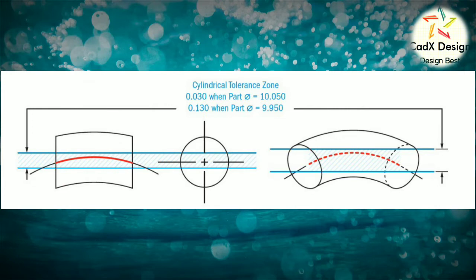GD&T tolerance zone: Two parallel lines on either side of a surface line where the surface must lie. A cylindrical boundary around the true central axis of the part where the derived midpoint axis of the part must fit into.